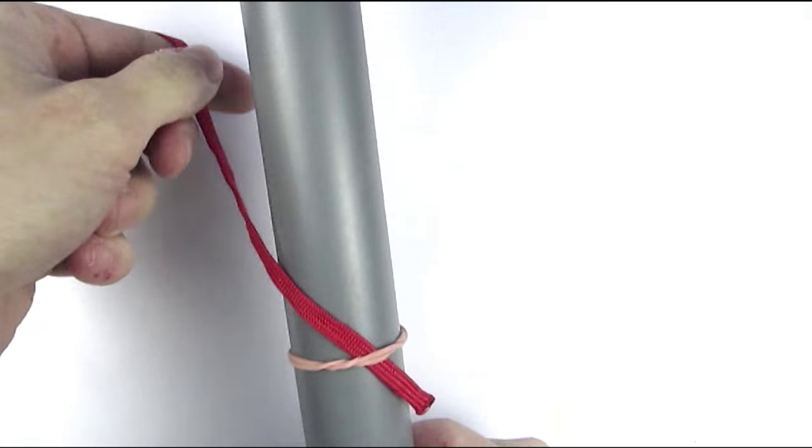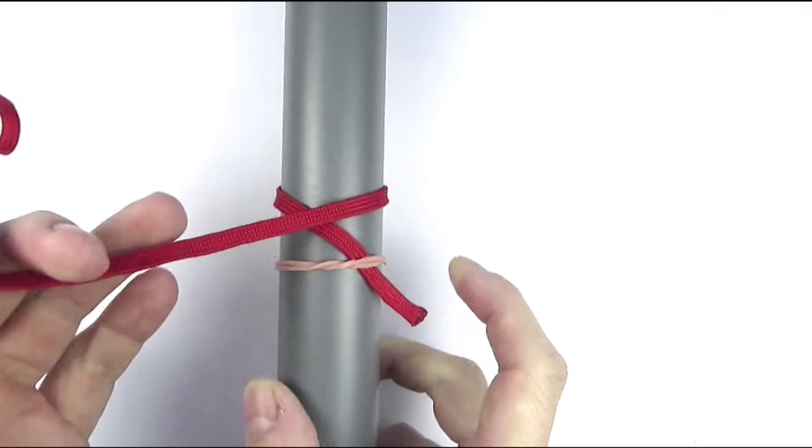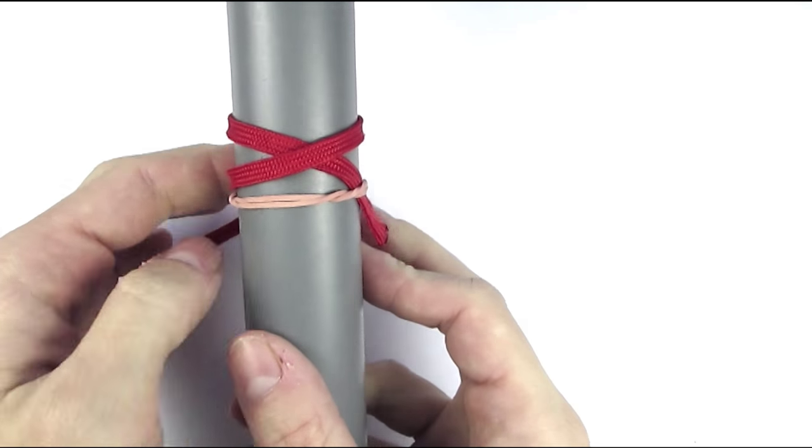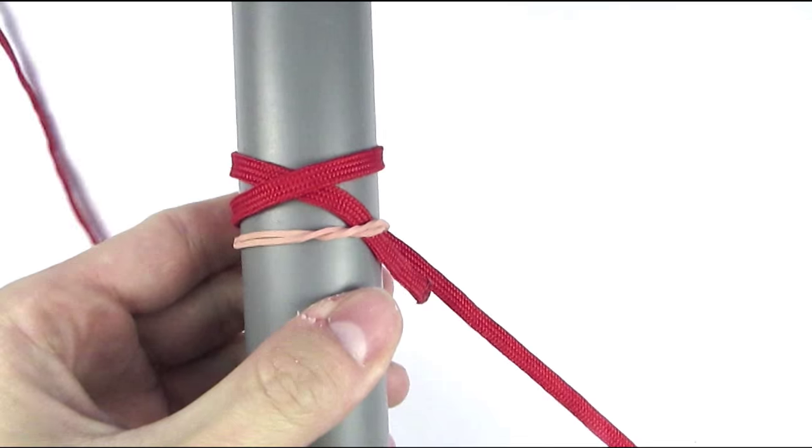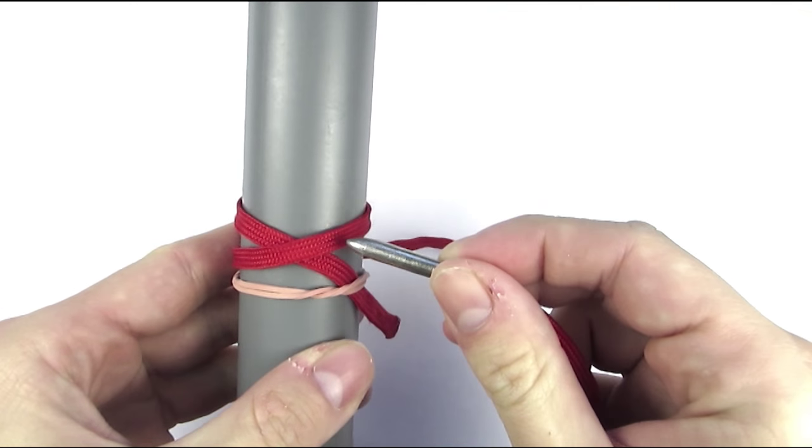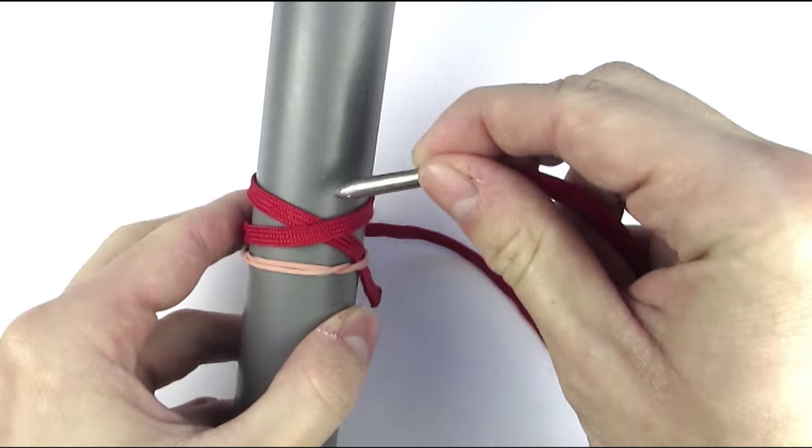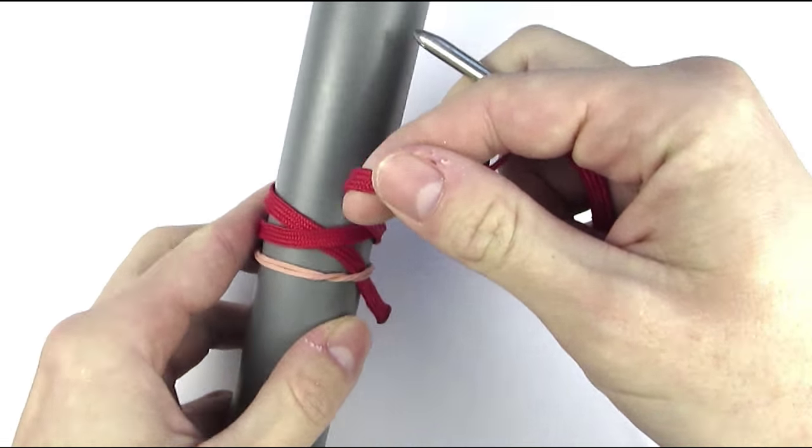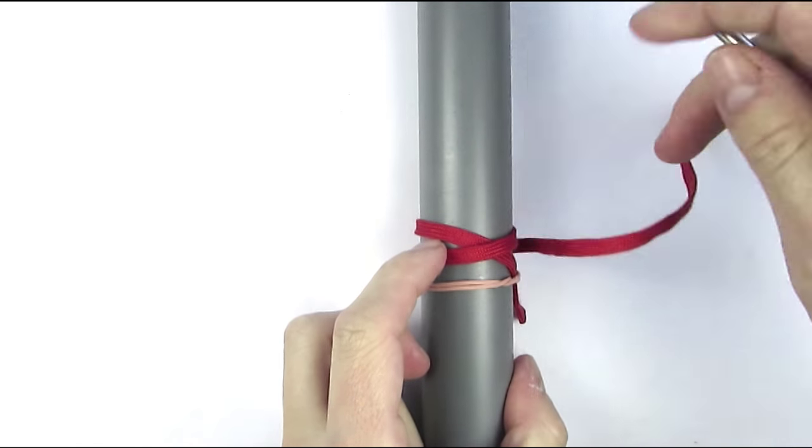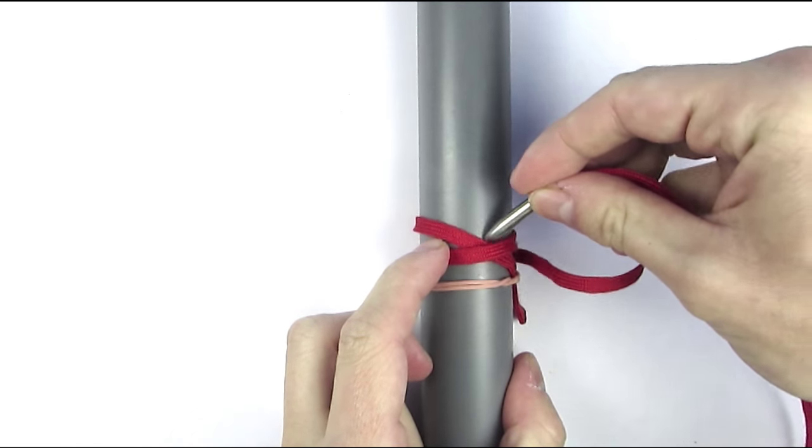And to start, I'm going to wrap around the mandrel once, going over the standing end, then around, then over with my cord like this, then under the standing end and over again.